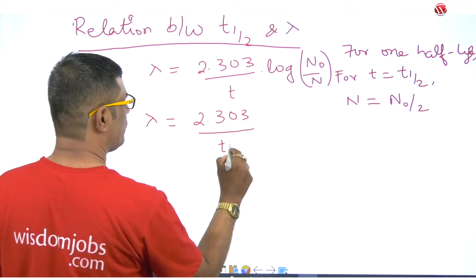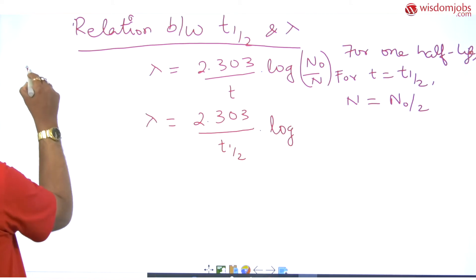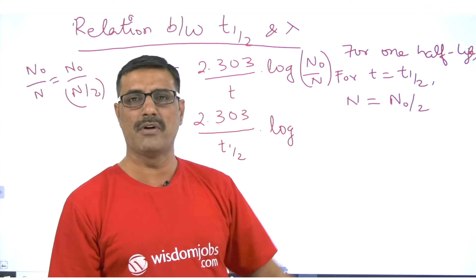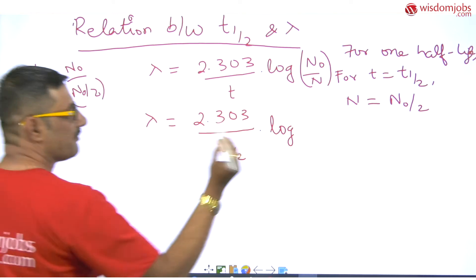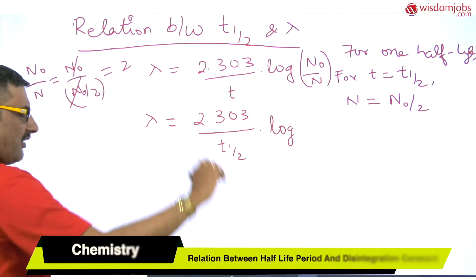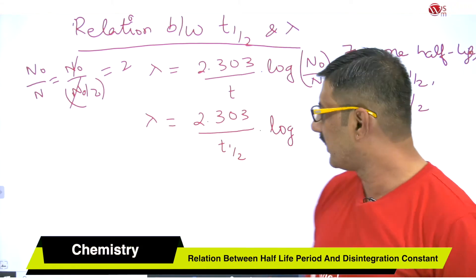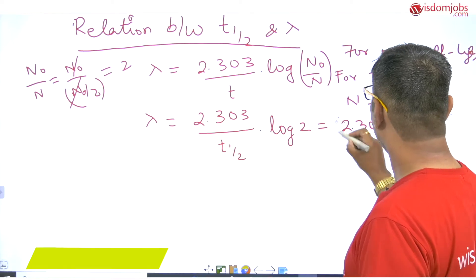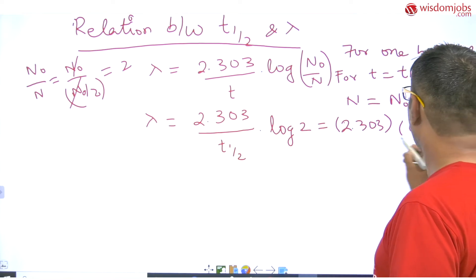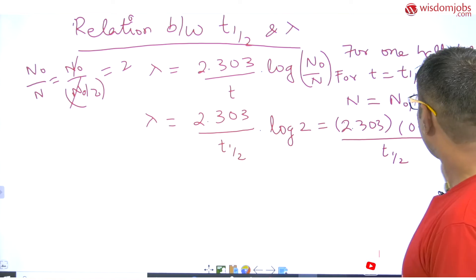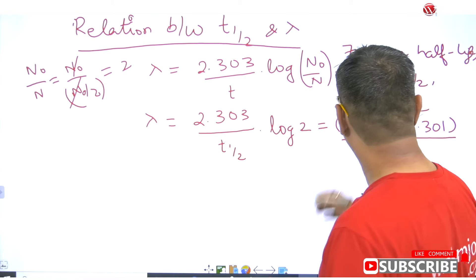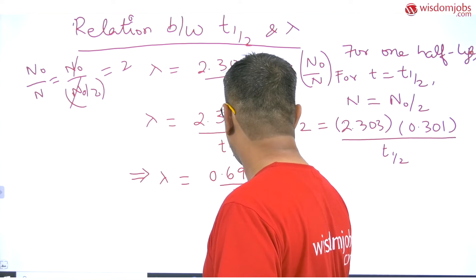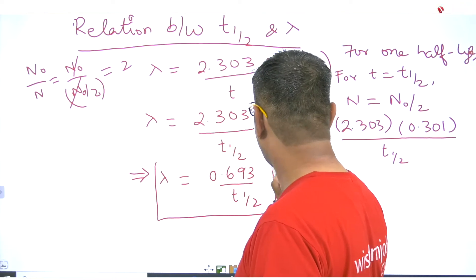Now let us substitute this condition into the equation. Lambda equals 2.303 divided by t-half, into log of N-naught upon N. Since N equals N-naught by 2, N-naught upon N becomes N-naught upon (N-naught/2), which simplifies to 2. So we have lambda equals 2.303 into log 2, divided by t-half. Since log 2 equals 0.3010, we get 2.303 times 0.301 equals 0.693. Therefore lambda equals 0.693 upon t-half.